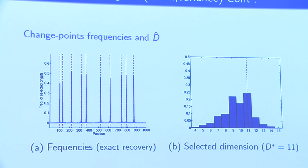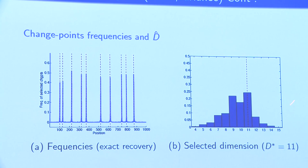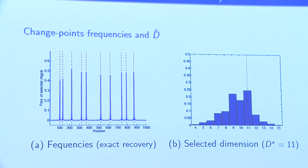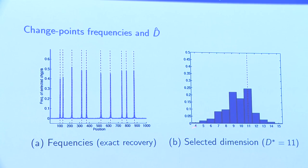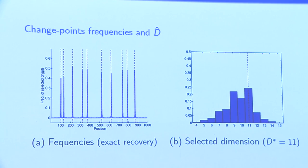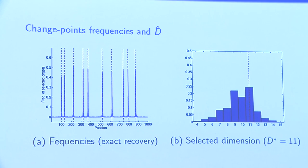The same conclusion holds for the second scenario, when all distributions have the same mean and variance. The distribution of D̂ is a little more spread, but it is a harder problem, and we are also dealing with histogram-valued data.